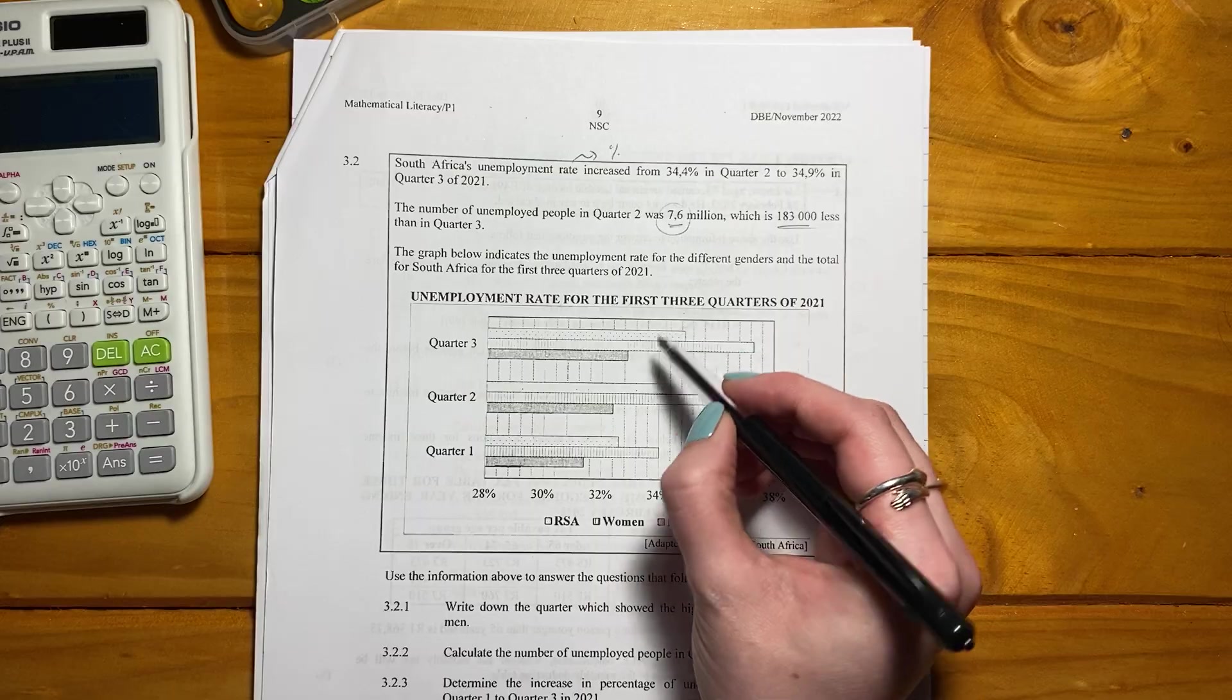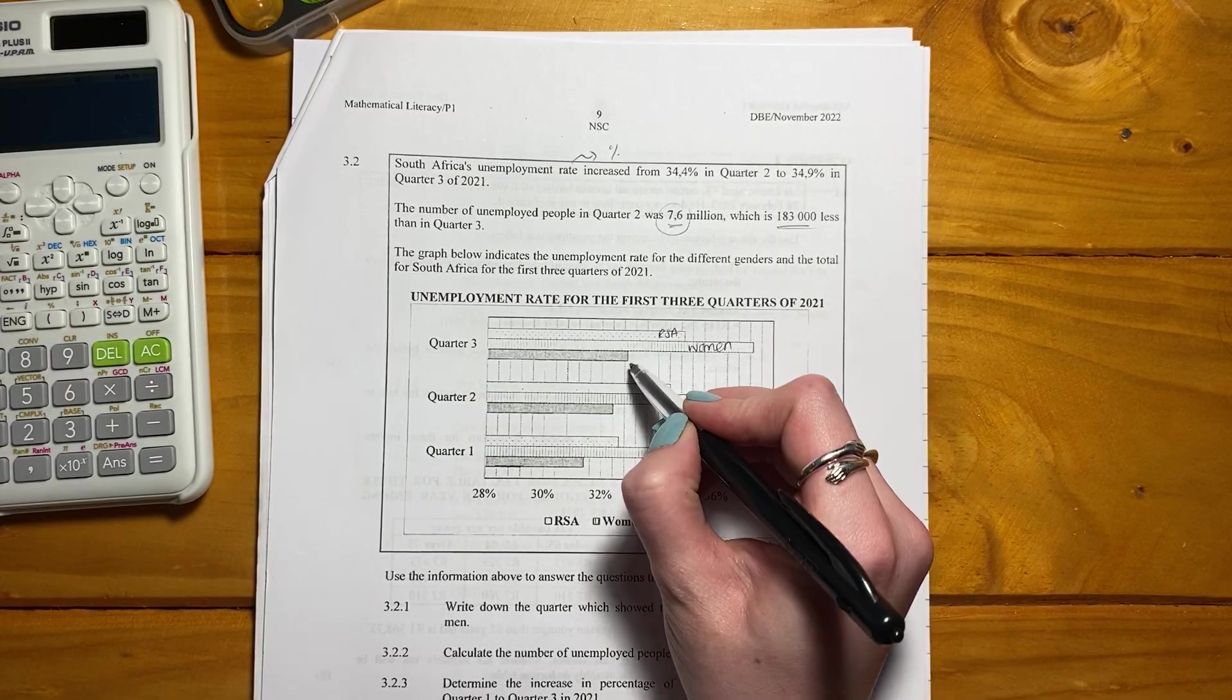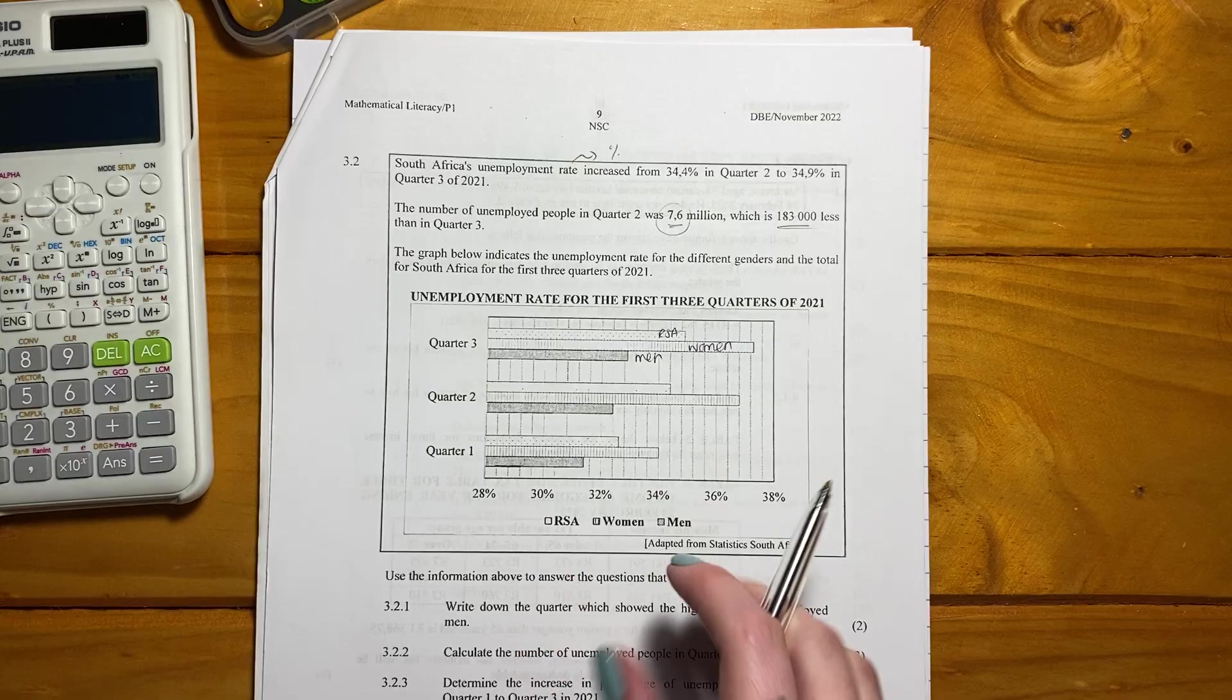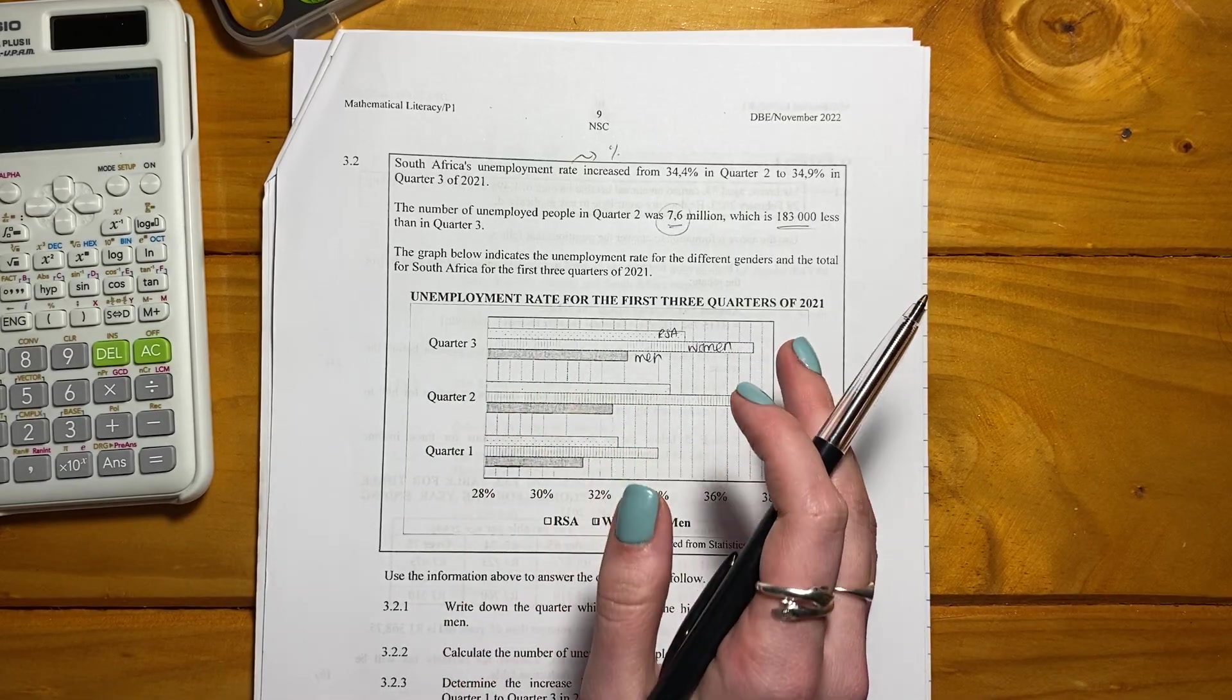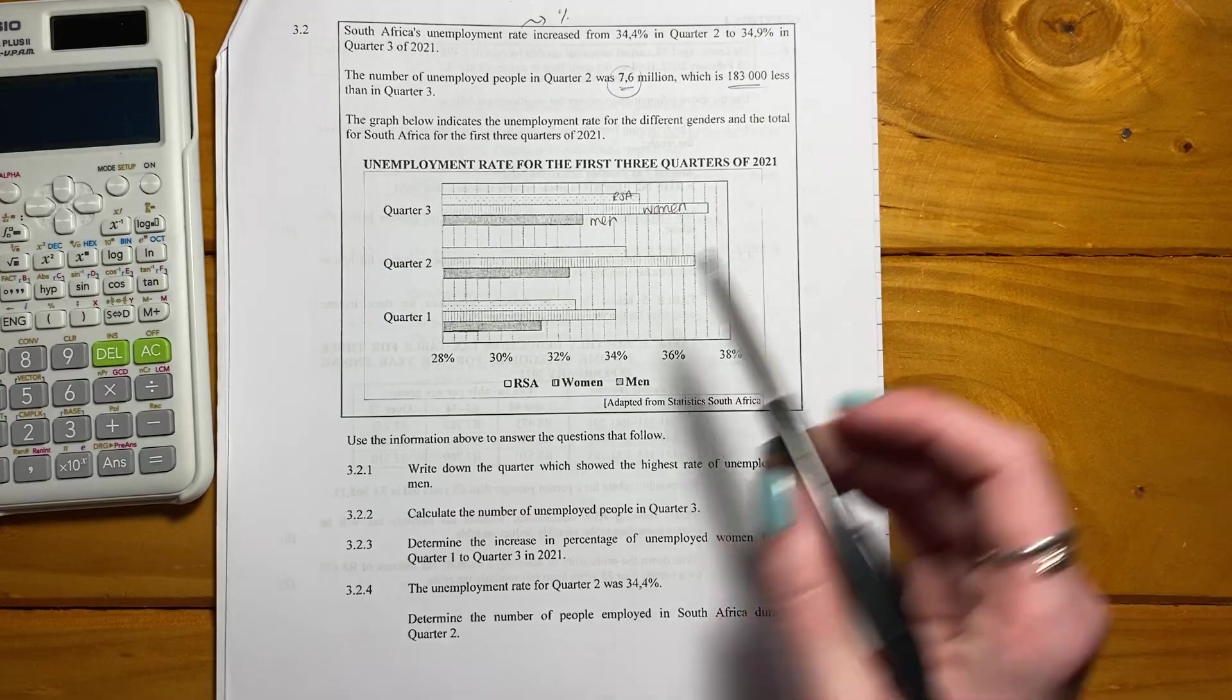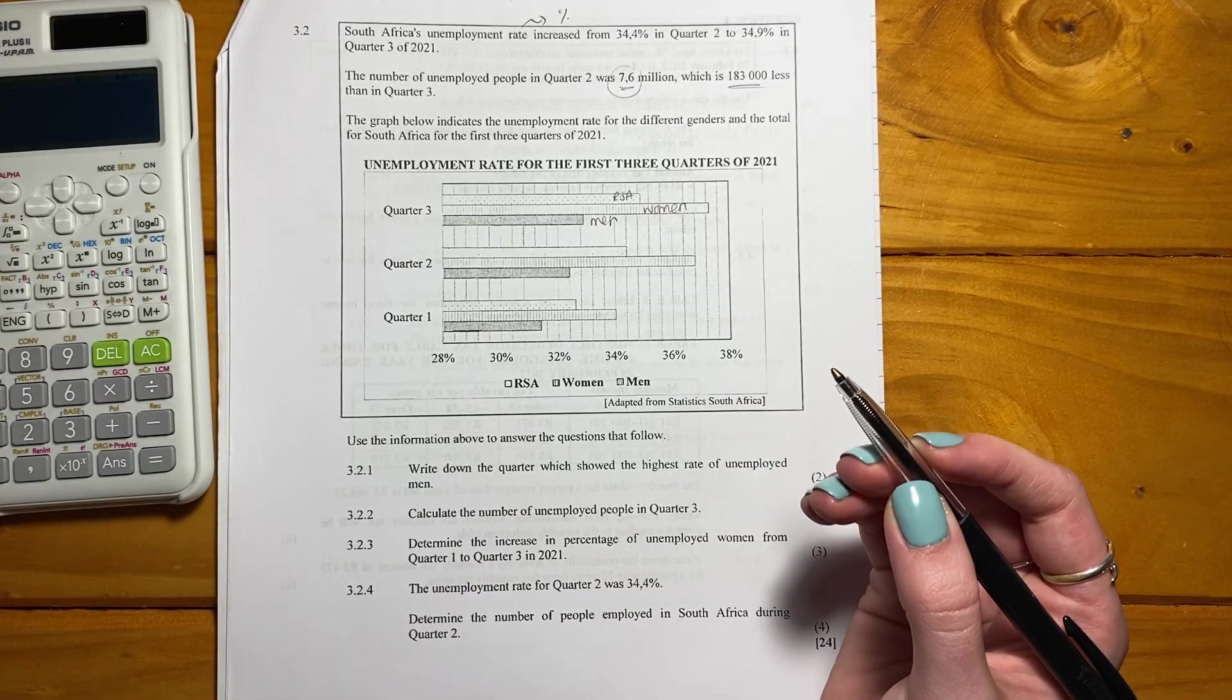This here is RSA, that is women and that is men, and that's the same for each of them across. If you have highlighters, go and highlight the different categories to make sure that you know what's going on. Again, if you don't know what's going on, don't stress. Let's go to the questions - they always help us understand the information presented.